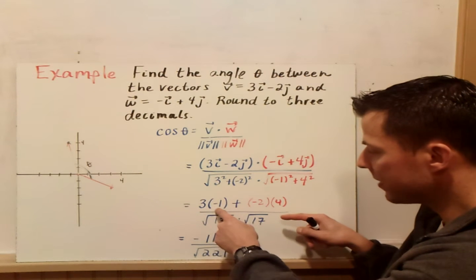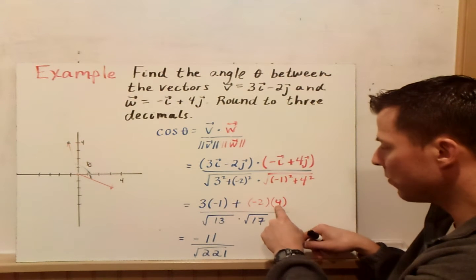Then it's a matter of algebra. So I have 3 times negative 1 plus negative 2 times 4. There's the dot product. That gives me negative 11 divided by the square root of 13 times the square root of 17, which is the root 221.